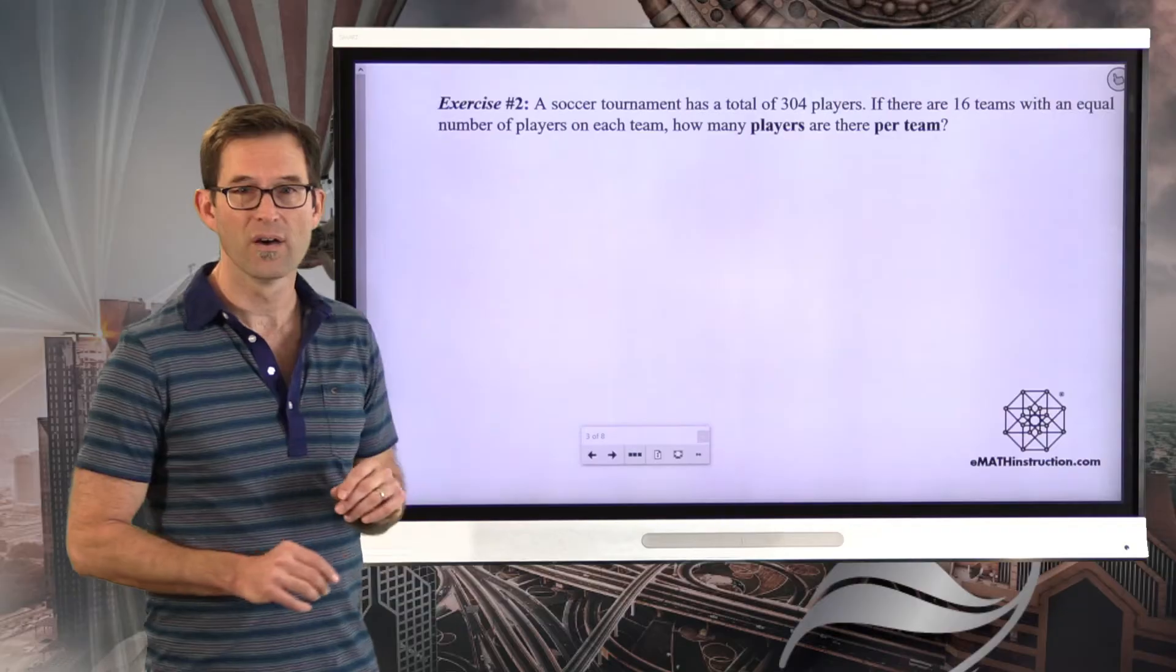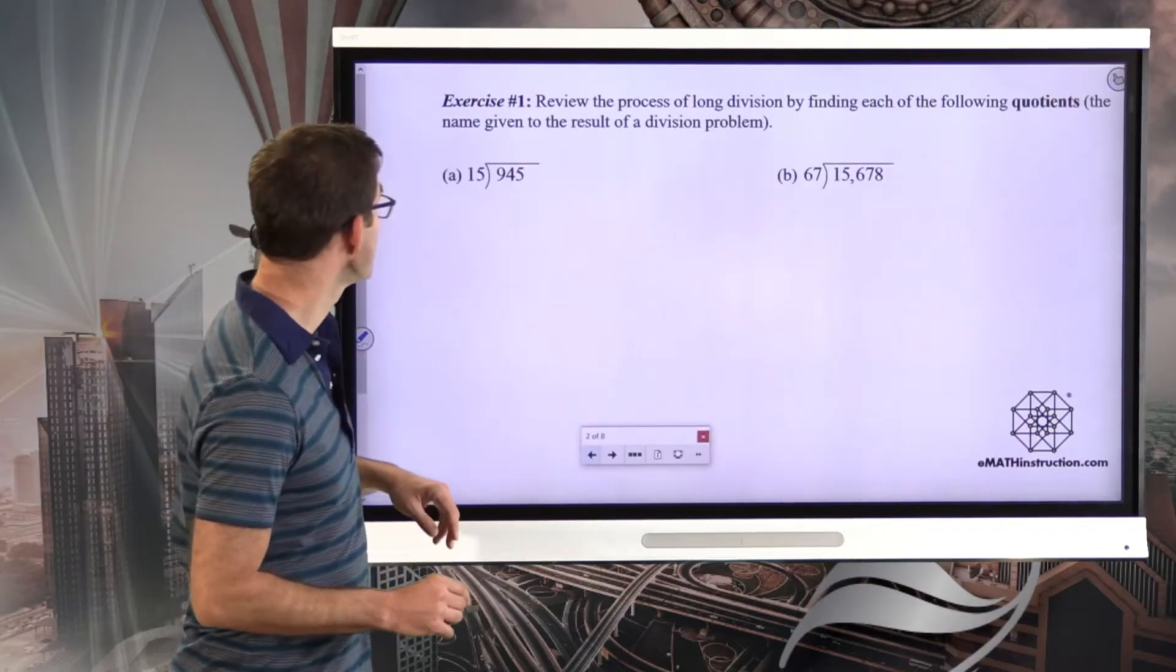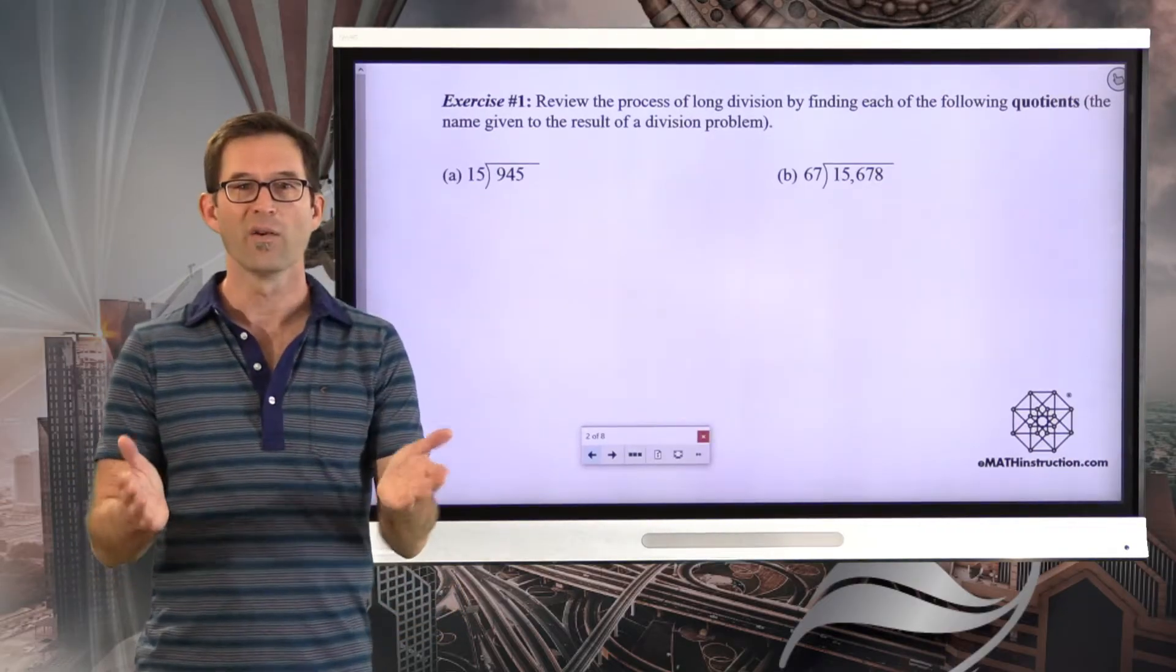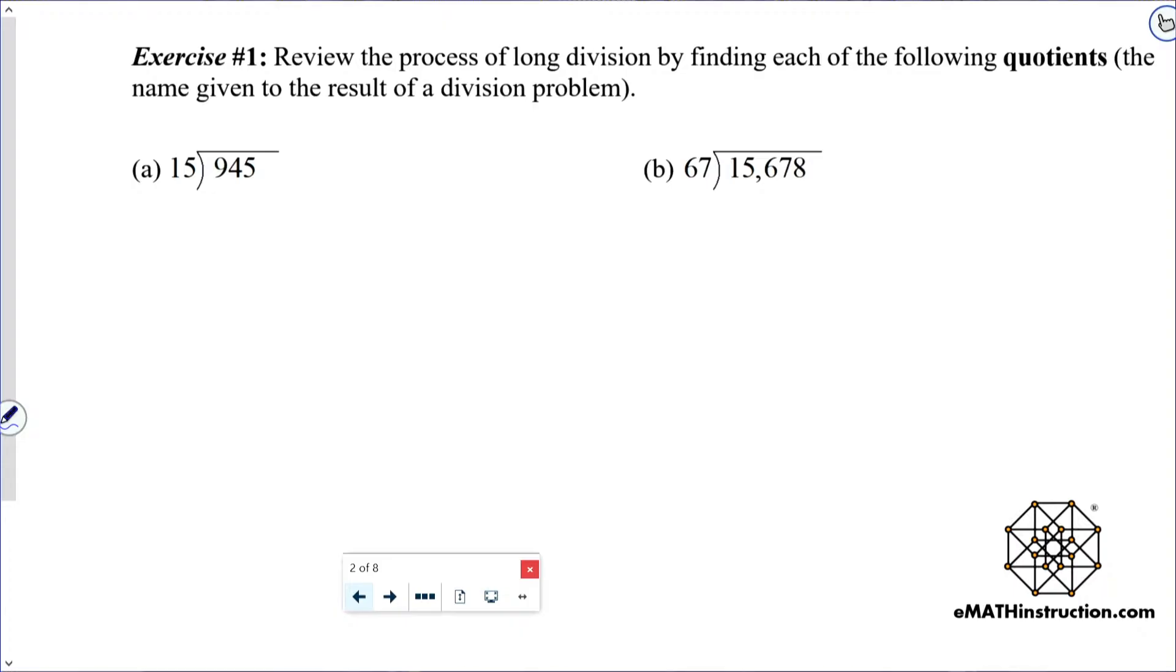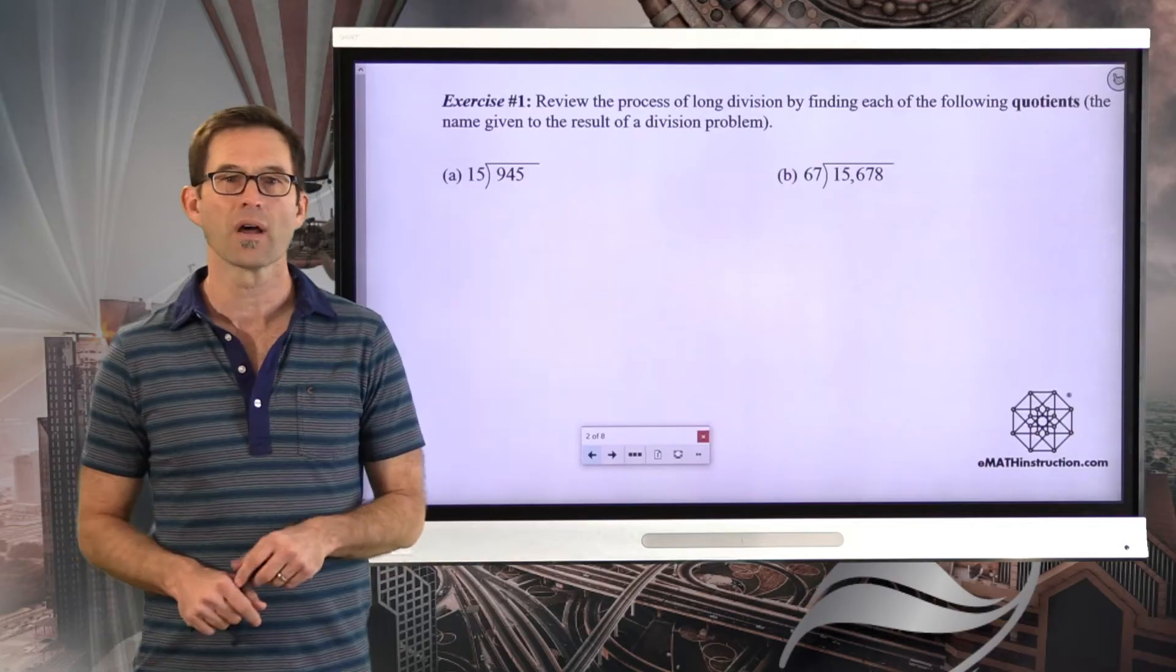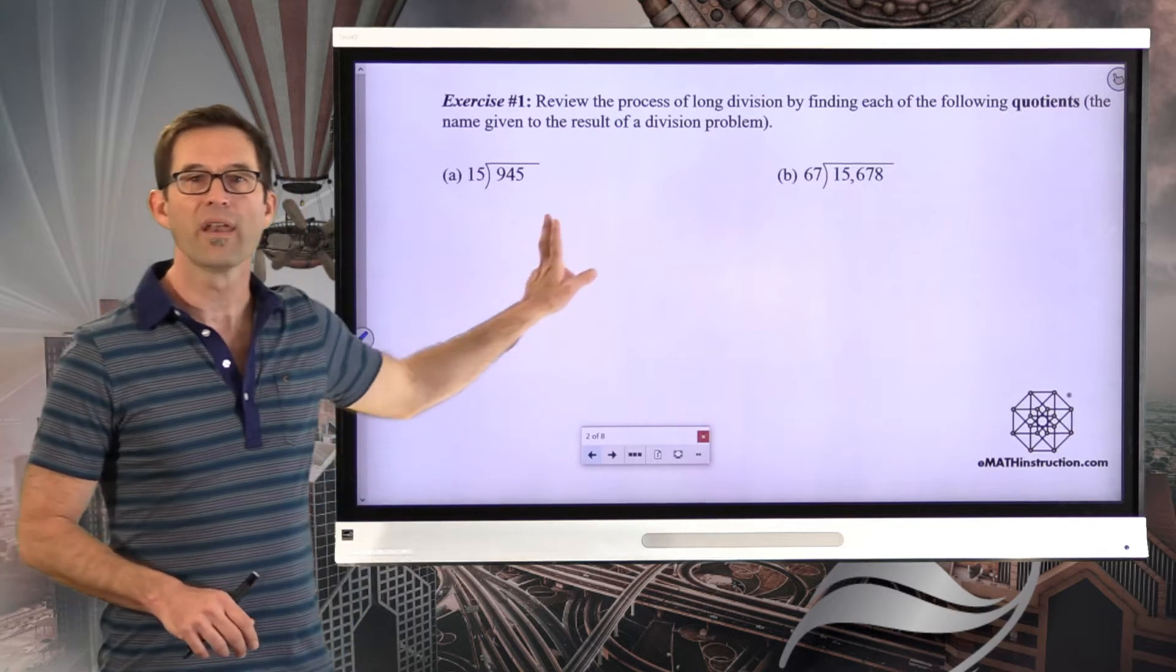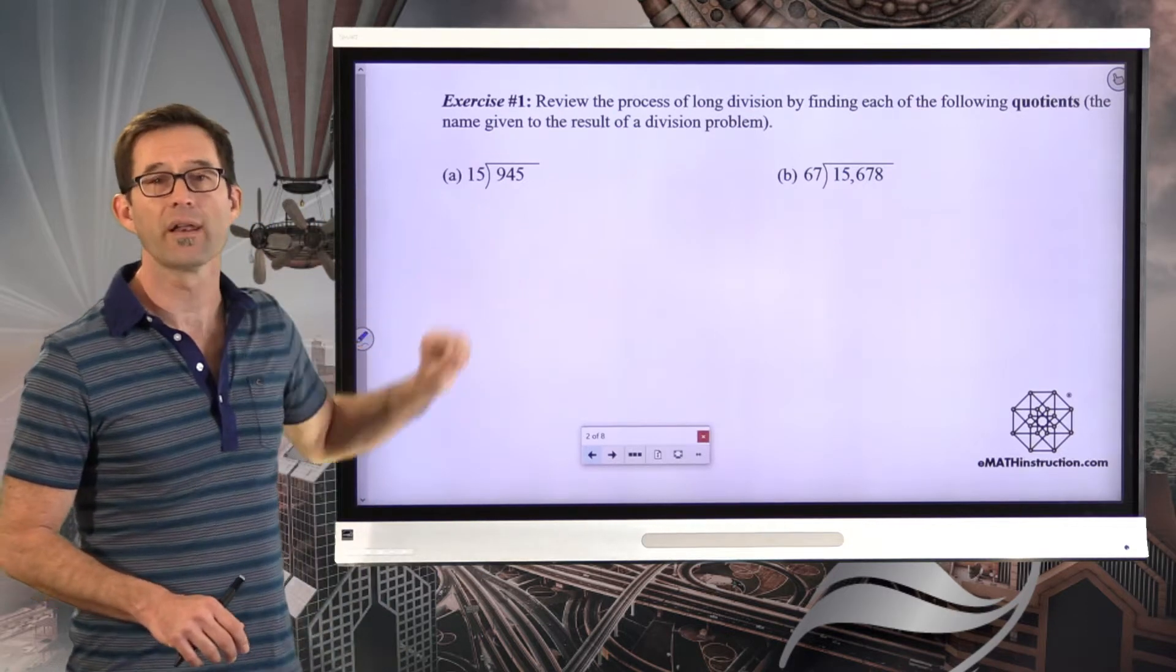All right, let's take a look. Exercise number one. Review the process of long division by finding each of the following quotients. That's just the name that we give to the result of a division problem. Here we've got 945 divided by 15.